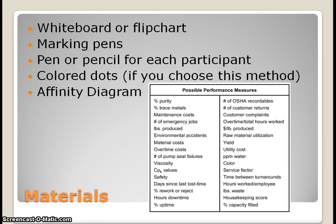Some materials you might need for this tool in a meeting or group facilitation: put the ideas on a whiteboard or flipchart so everyone can clearly see them. Have markers or pens to mark items that continue to the next vote — expo markers if you're using a whiteboard. Provide a pen or pencil for each participant for brainstorming, and if you choose the colored dots method, you'll need to have dots for everyone.